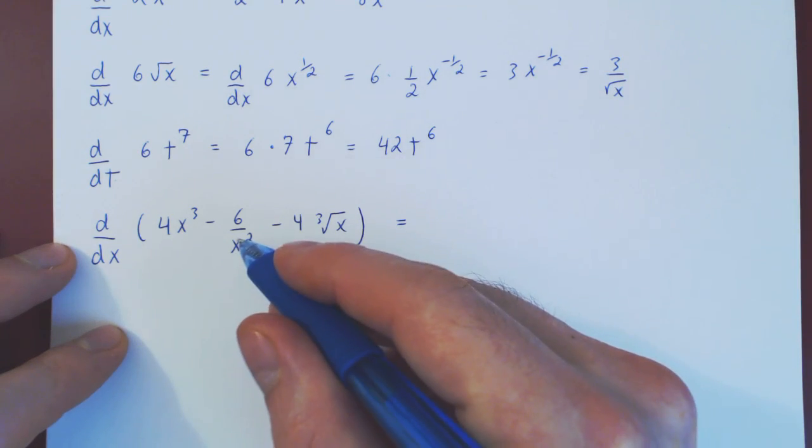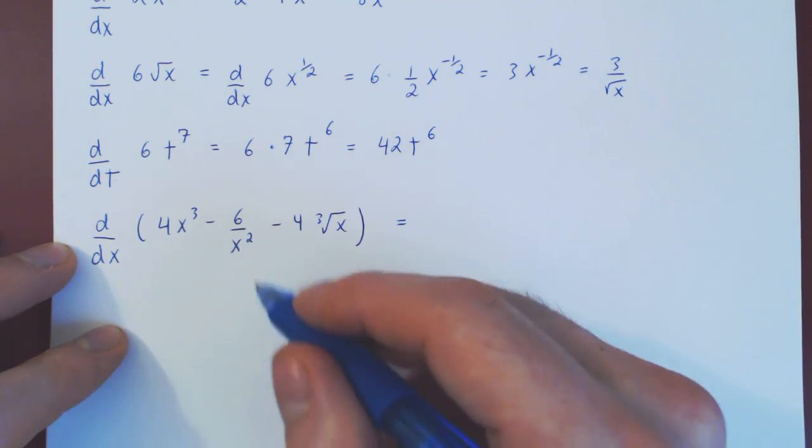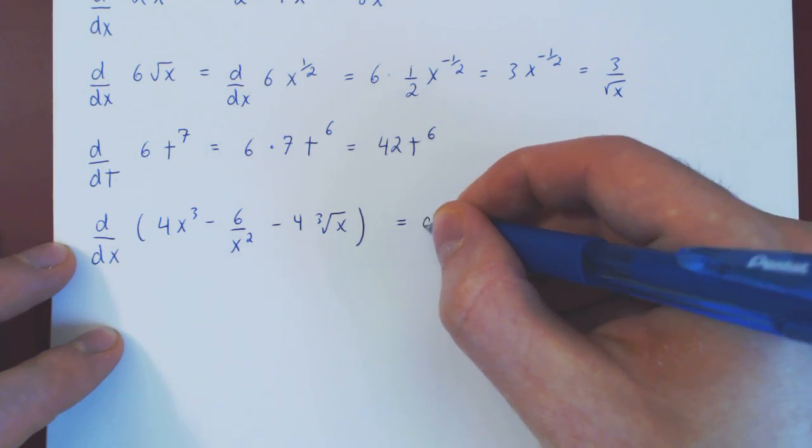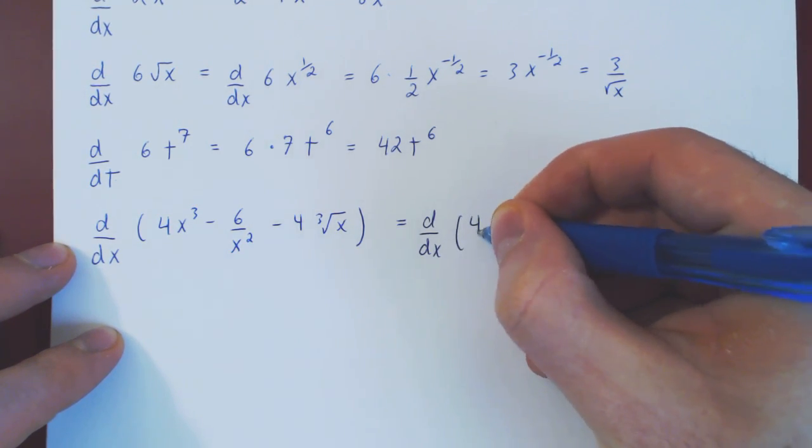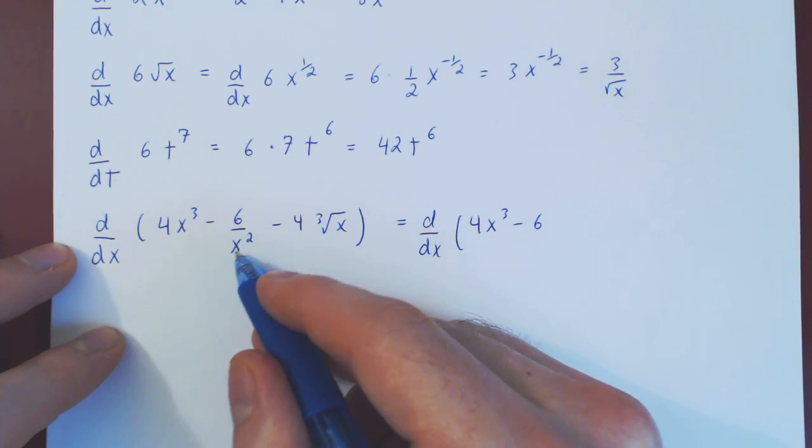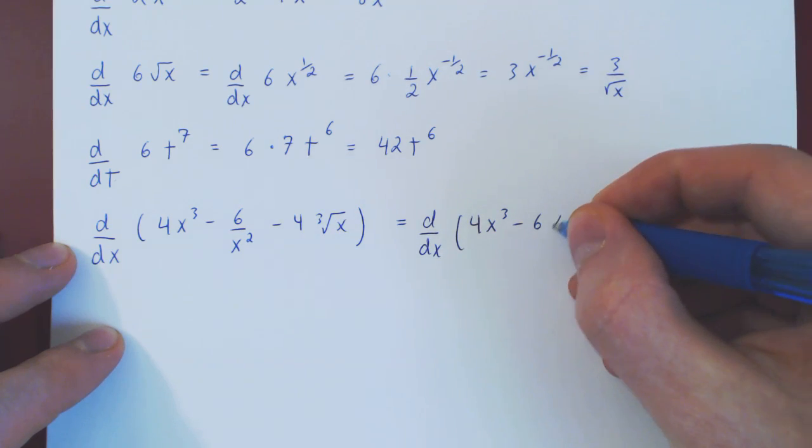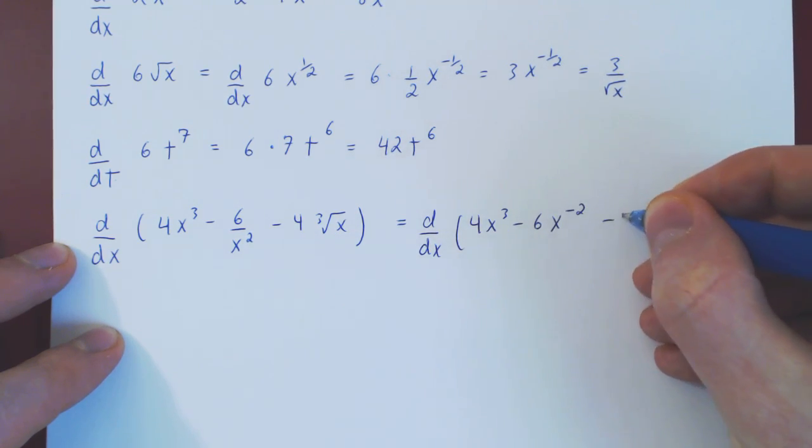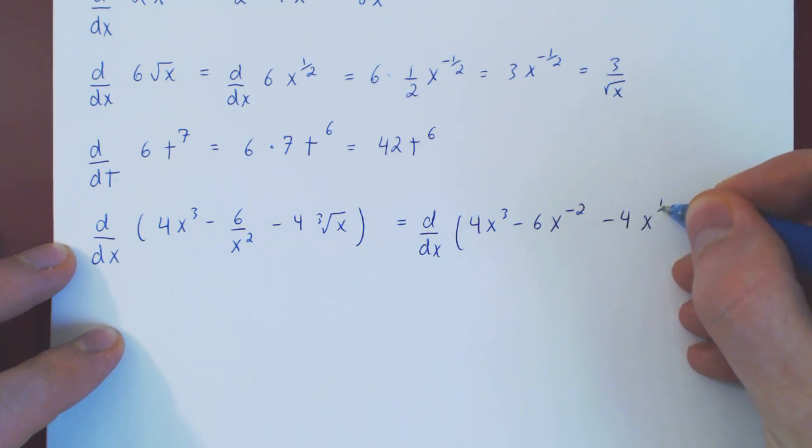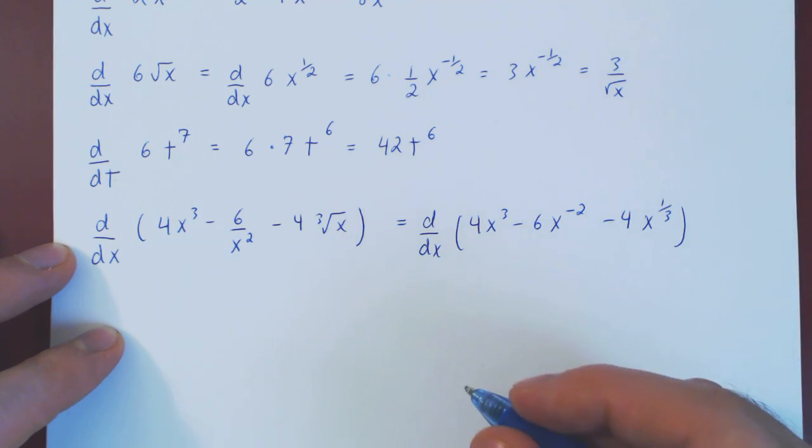The first step is to rewrite the second and third term in a different way so that we can use the power rule. This would be the derivative of 4x cubed minus 6. If you bring 1 over x squared back up, it becomes an x to the negative 2. And the cube root of x is x to the positive 1 third, and now we're good to go.